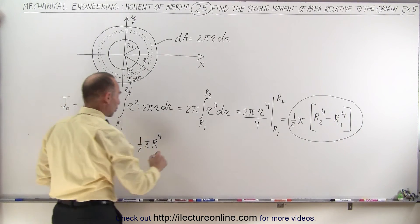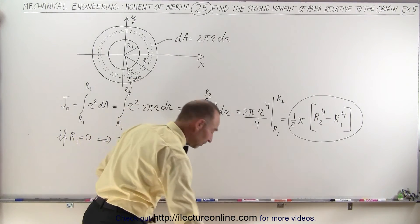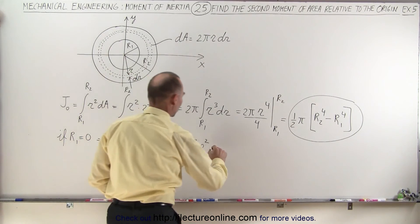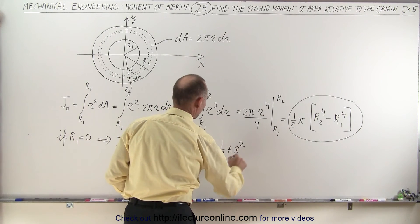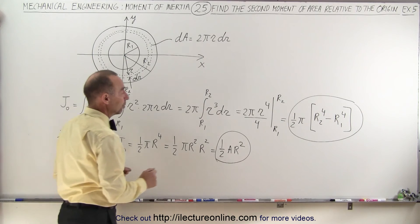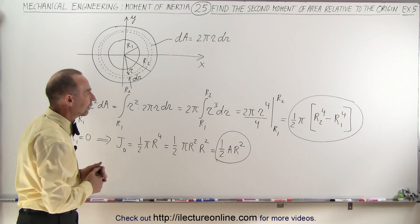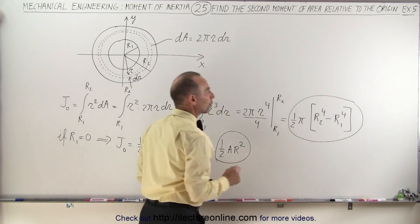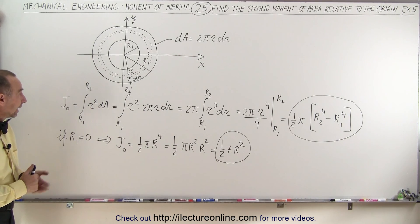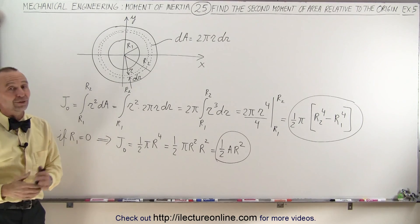Realizing that the area is πr², we can write this as one half π r squared times r squared — which is the area — so this equals one half times the area times r squared. This looks familiar, because the moment of inertia of a disk with mass m is one half mass times r squared. So instead of mass we have area, and that's why we call it the second moment of area. This confirms the general equation gives the correct result whether r1 is zero or not, and that's how we find the second moment of area of either a flat disk or a disk with a hole of inner radius r1.